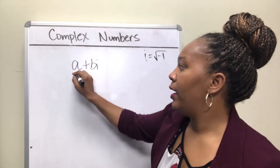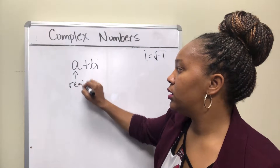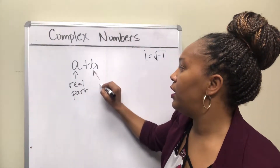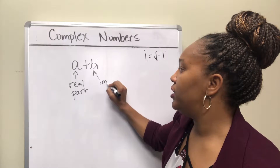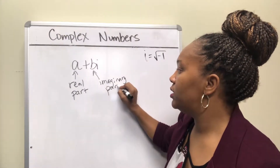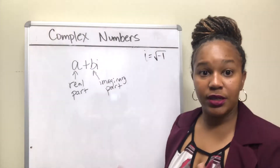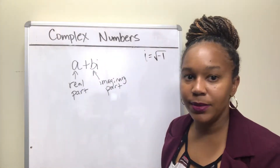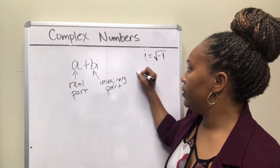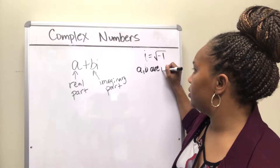When you have a number of the form a plus bi, it's a complex number. 'a' is called the real part and 'b' is called the imaginary part. The imaginary part is the part connected with i. Both a and b are real numbers.